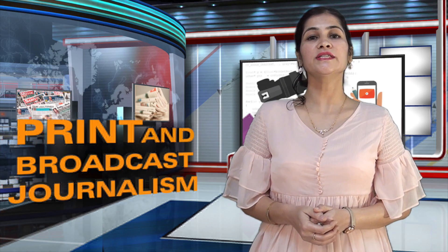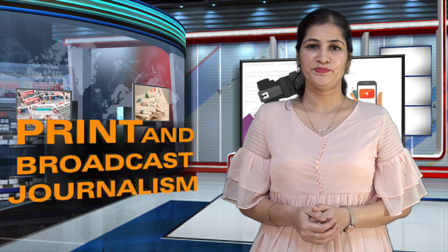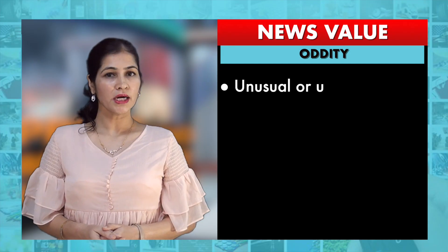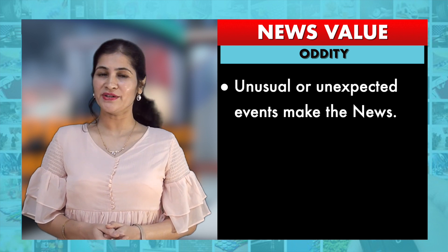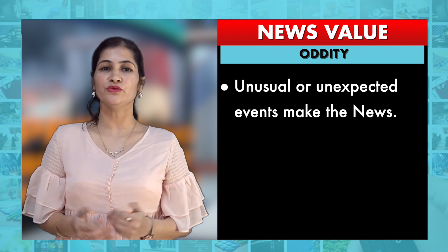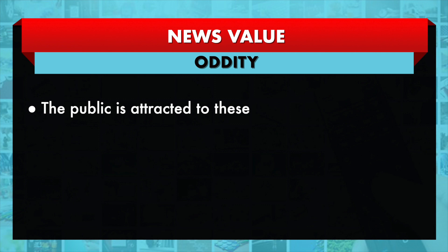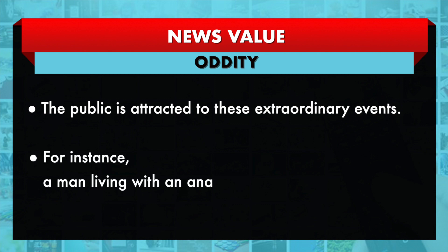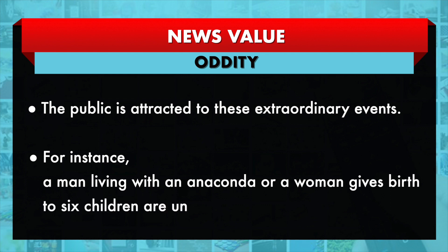The seventh news value is oddity. Unusual or unexpected events make the news, and the public is attracted to these extraordinary events. For instance, a man living with an anaconda or a woman giving birth to six children are examples of unusual news.